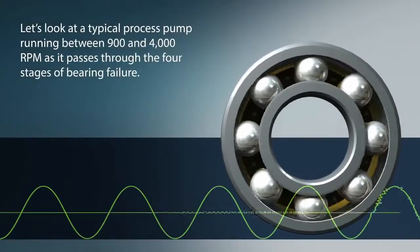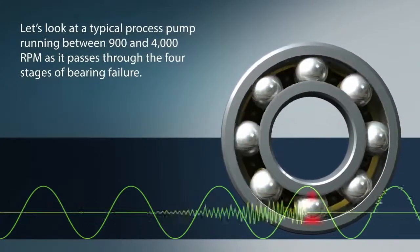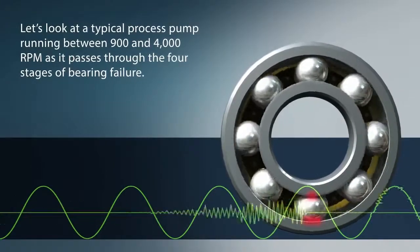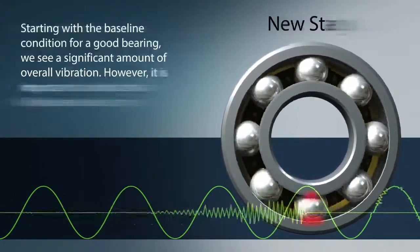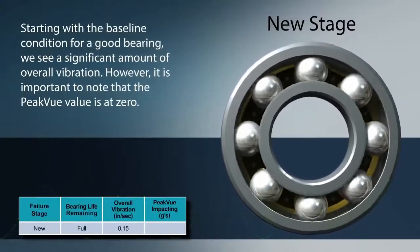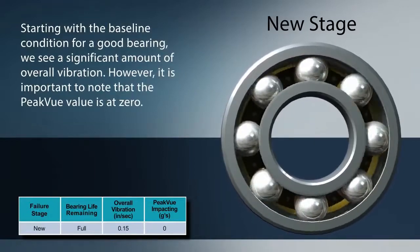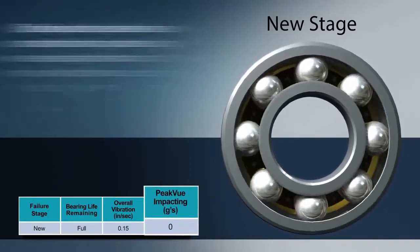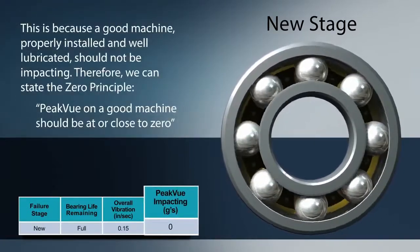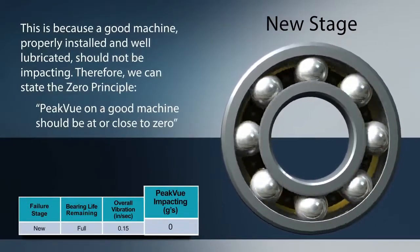Let's look at a typical process pump running between 900 and 4000 RPM as it passes through the four stages of bearing failure. Starting with the baseline condition for a good bearing, we see a significant amount of overall vibration. However, it is important to note that the peak view value is at zero. This is because a good machine, properly installed and well lubricated, should not be impacting.